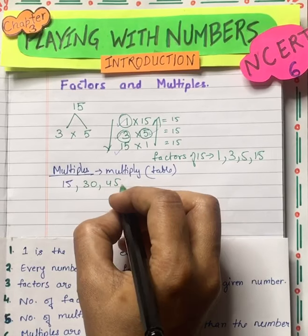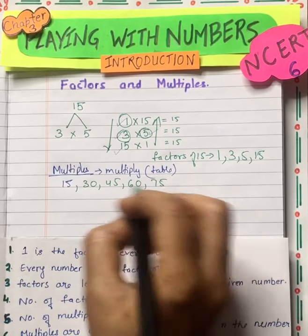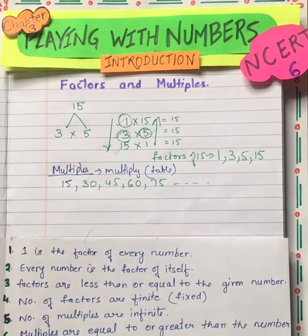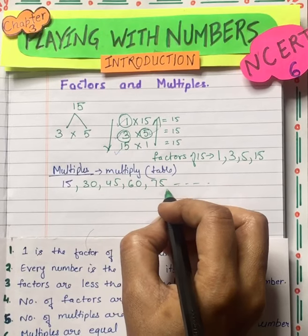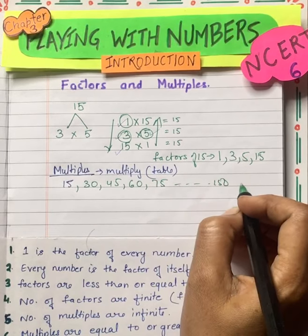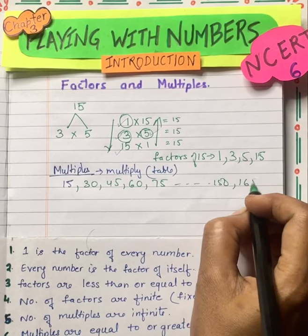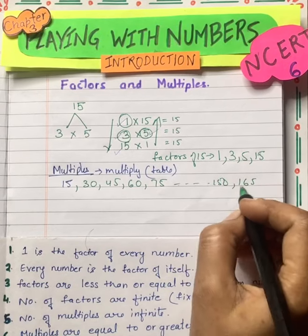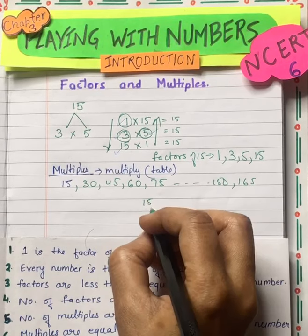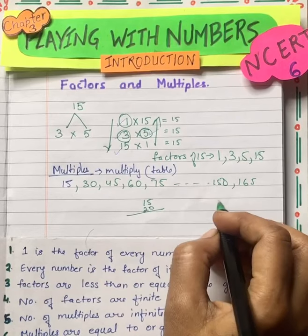Multiples means multiply — remember the tables. So we know that 15 — 1s are 15, 2s are 30, then 45, then 75, and so on. If we multiply 15 by 10, then 150 comes. If we multiply 15 by 20, then we get the multiple 300.